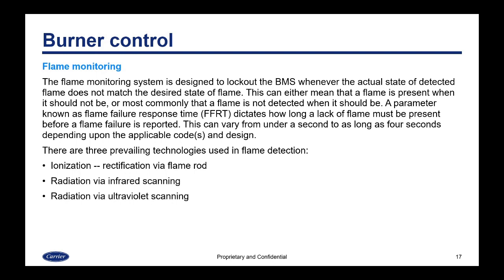The flame monitoring system is designed to lock out the BMS whenever the actual state of detected flame does not match the desired state of flame. This can mean that the flame is present when it should not be, or most commonly that a flame is not detected when it should be. A parameter known as flame failure response time dictates how long a lack of flame must be present before a flame failure is reported, and this can vary from under a second to as long as four seconds depending upon the applicable code and design.